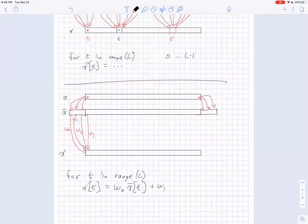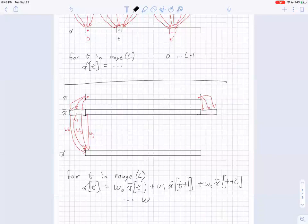So W1 times X bar of T plus one, the next one over. W2 X bar T plus two. And we end up with W6 X bar T plus six. So this works out just right on the left hand side. On the right hand side, we contemplate pulling in this element here. At this point T is equal to L minus one. So when we add T to six, then we have L plus five.